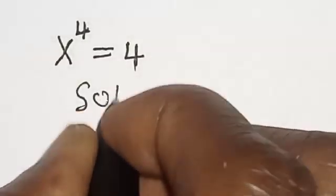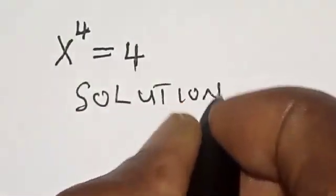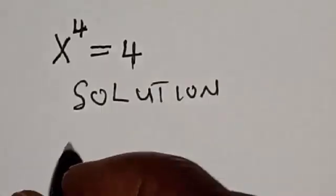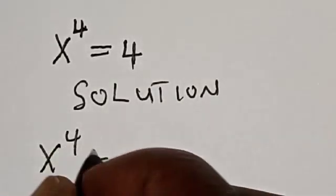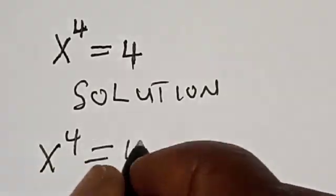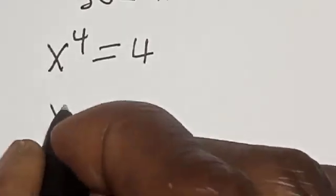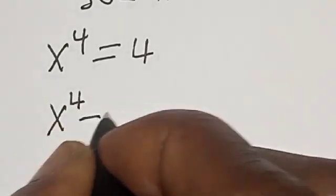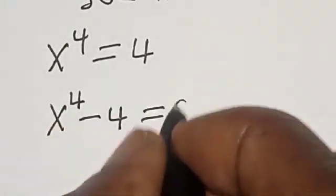Solution. x raised to power 4 is equal to 4. Let's bring this 4 to the other side: x raised to power 4 minus 4 is equal to 0.